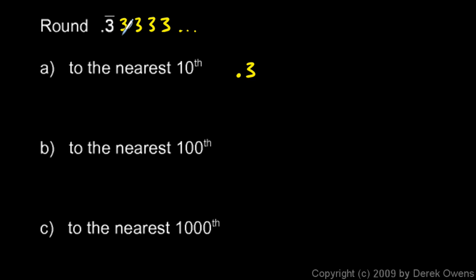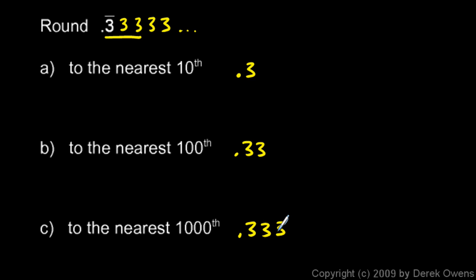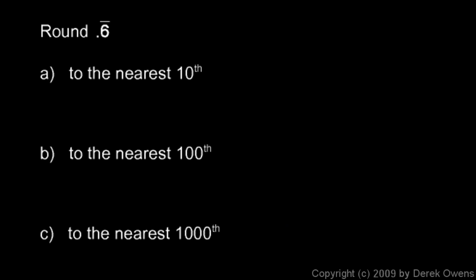To the nearest tenth the answer is 0.3. To the nearest hundredth — that's the second digit after the decimal — we look at the digit after that, and it's not 5 or higher because all these digits are 3, so we don't round up. This is just 0.33. And to the nearest thousandth, that's three places — the next digit is not 5 or higher, so we don't round up. The answer is 0.333.